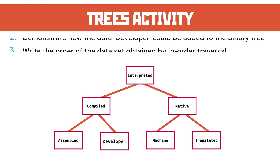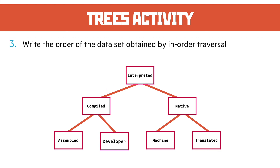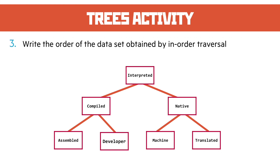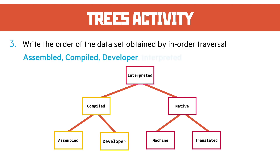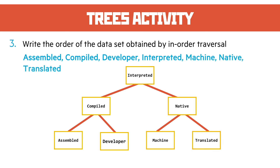Question 3: write the order of the data set obtained by in-order traversal. So we start with 'assembled', then 'compiled', then 'developer', then 'interpreted', then 'machine', then 'native', then 'translated'.